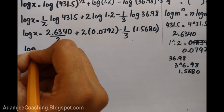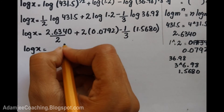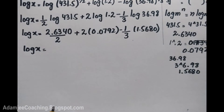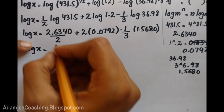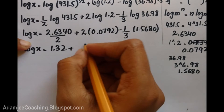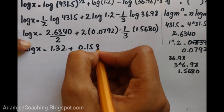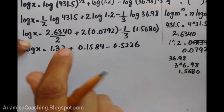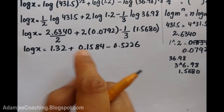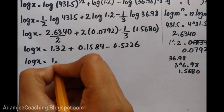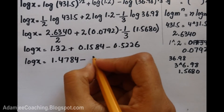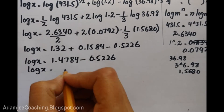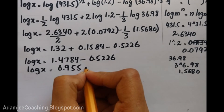Now we combine the values. Adding the positive terms: one half of 2.6340 is 1.3170, plus 0.1584 gives 1.4784. Then subtracting 0.5226: 1.4784 minus 0.5226 equals 0.9558.